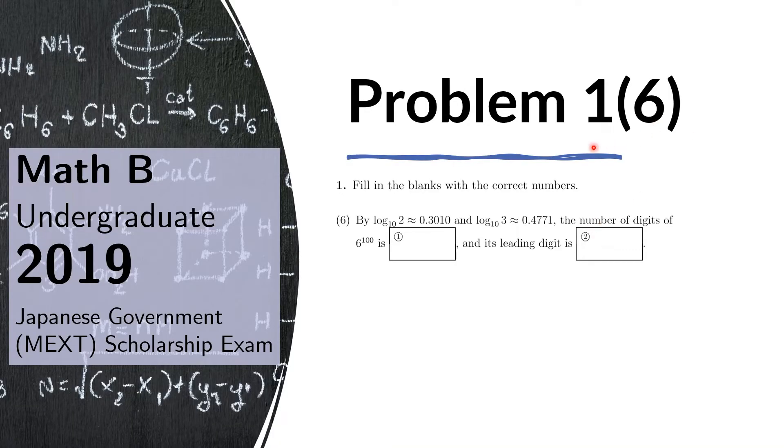Problem 1(6). By log of 2 to the base 10 approximately equals 0.3010 and log of 3 to the base 10 approximately equals 0.4771, the number of digits in 6 to the 100th is blank and its leading digit is blank.